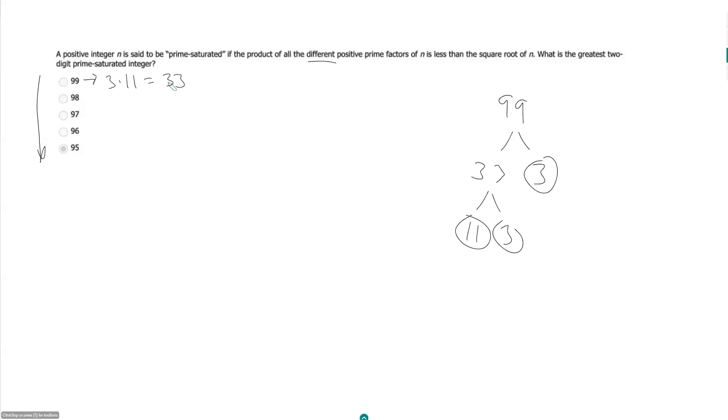33 is definitely not less than the square root of 99. The square root of 100 is 10, so this is going to be close to 10. And so this is not prime saturated because 33 is greater than the square root of 99.